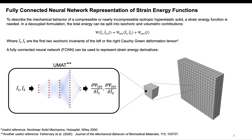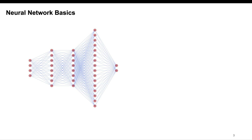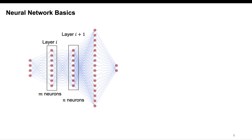For using our user material subroutine, the only thing you need to get a little bit familiar with is how a neural network works. Let's consider the neural network shown in the figure, which has multiple layers. Let's consider layer I, which has M neurons, and layer I plus 1, which has N neurons. We want to know what the output is after layer I plus 1.